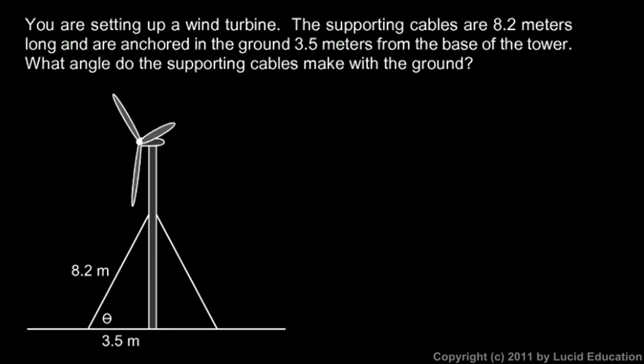One more. You are setting up a wind turbine. Here it is, this wind turbine has these blades here which will blow in the breeze, and inside this piece right here is a generator. As the wind blows it turns the generator and produces electricity, but the wind blowing produces some lateral force on it which could put a lot of sideways stress on this pole. So these guy wires here help anchor it to the ground and give it extra strength and stability. These are referred to as supporting cables, and we're told that they're 8.2 meters long.